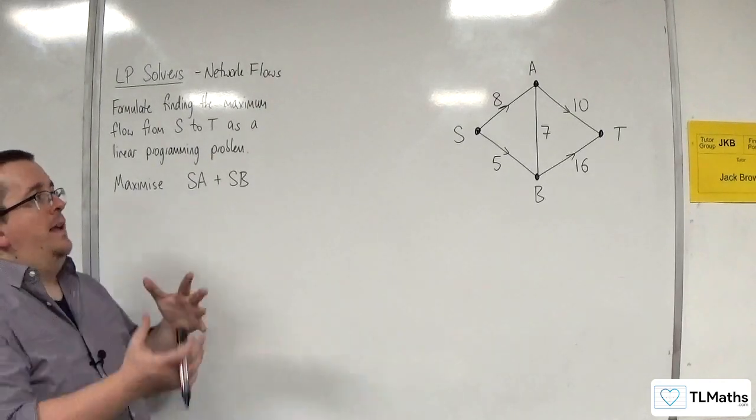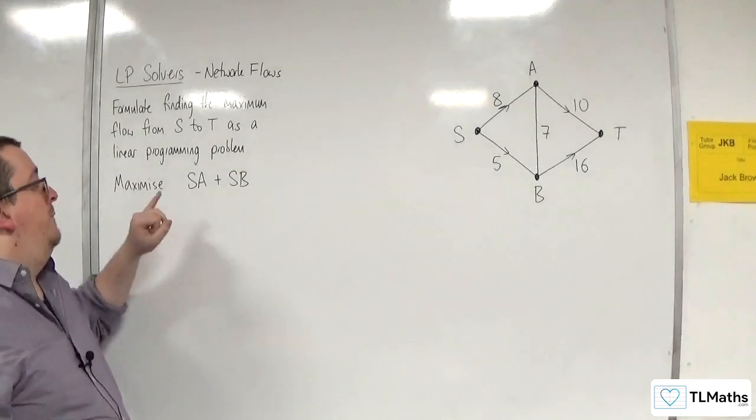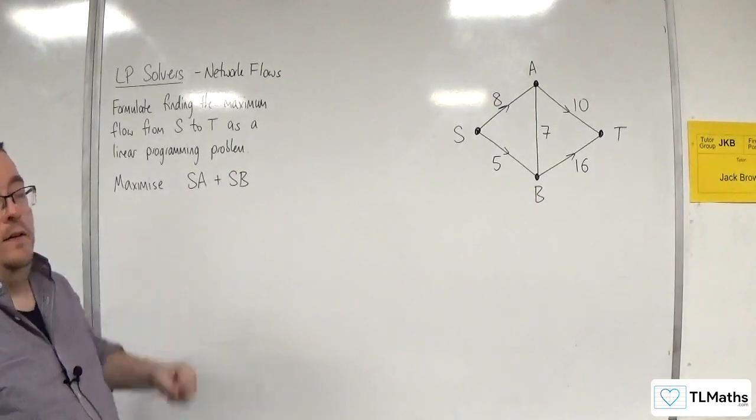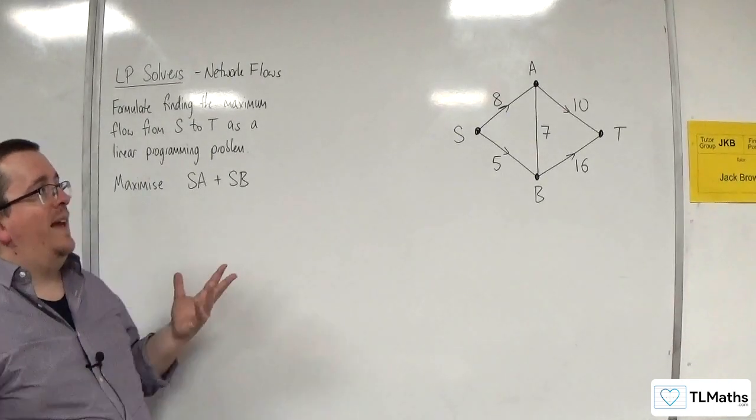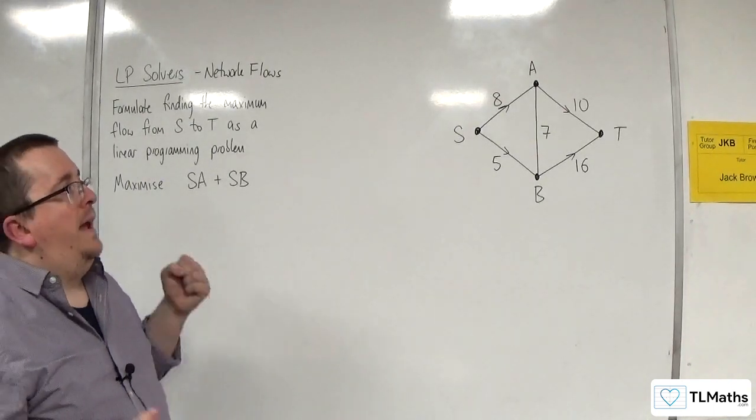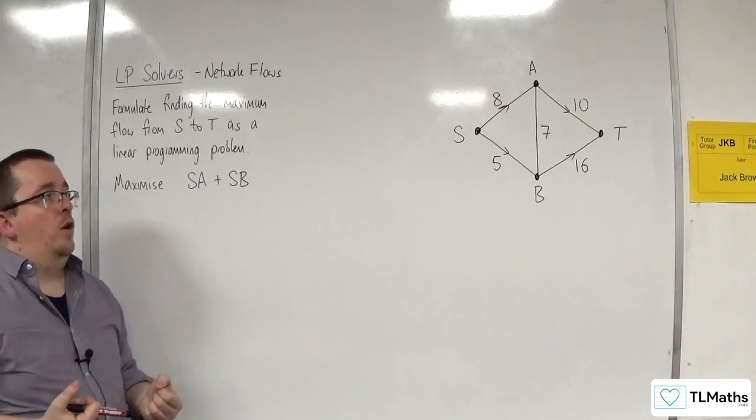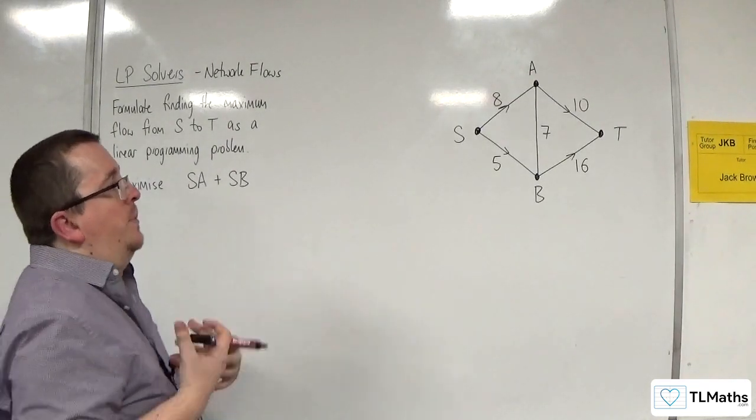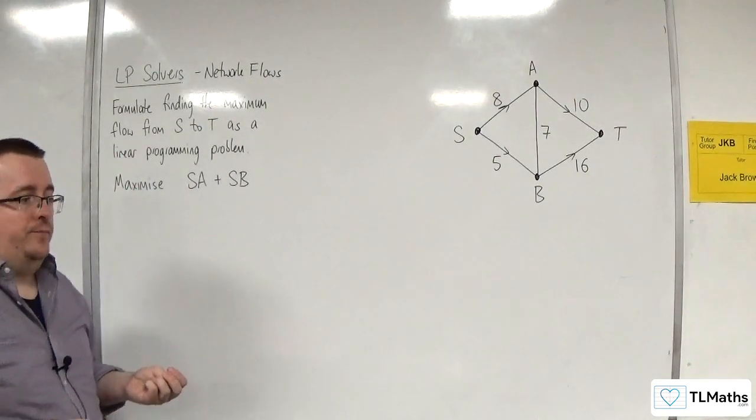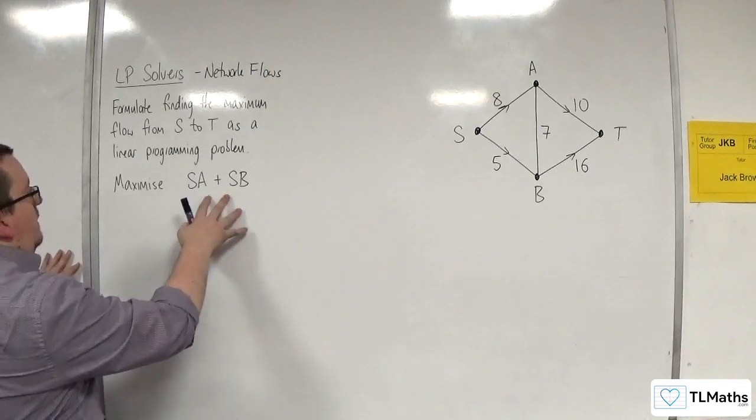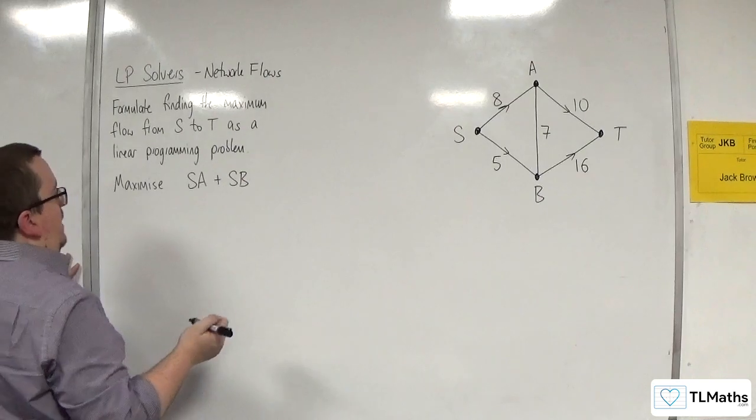Now, notice what's different to the shortest path and longest path is I don't have the weight times by S, A. Because remember, S, A is not an indicator variable here. I'm not writing 8, S, A. S, A is going to represent the flow that I'm allowed to actually go along that edge. But I will have to have a constraint saying that I can't have it more than 8. So that is the objective function. It's a lot shorter than shortest path and longest path.